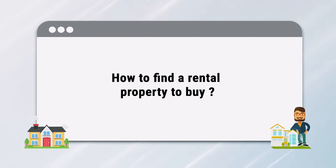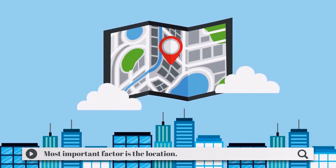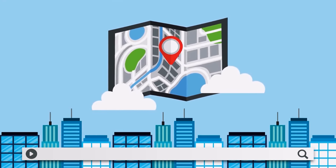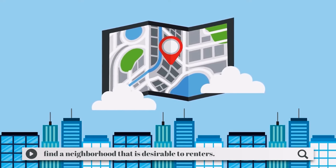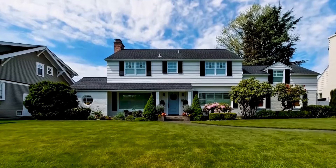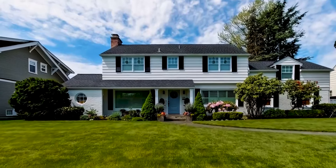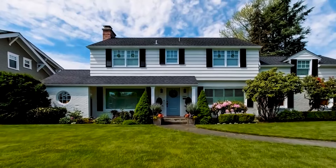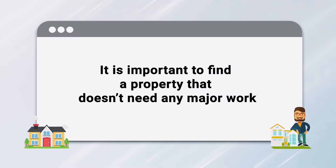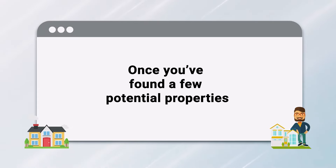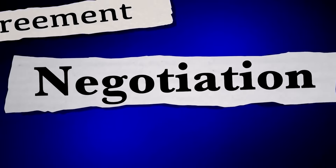How to find a rental property to buy: the most important factor to consider when purchasing a rental property is the location. It's important to find a neighborhood that is desirable to renters. The closer the property is to amenities like public transportation, restaurants, and shopping, the more attractive it will be to potential tenants. It's also important to find a property that is in good condition, as you will be responsible for any repairs or maintenance needed. Once you've found a few potential properties, it's time to start negotiating with sellers to get the best possible price.